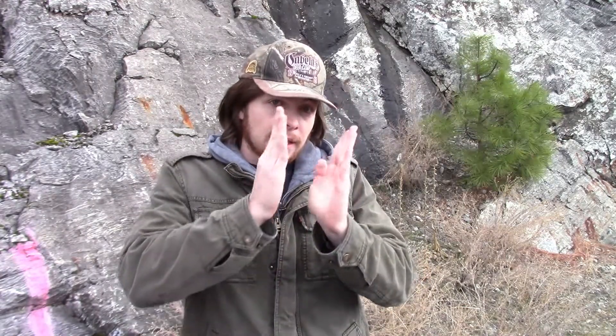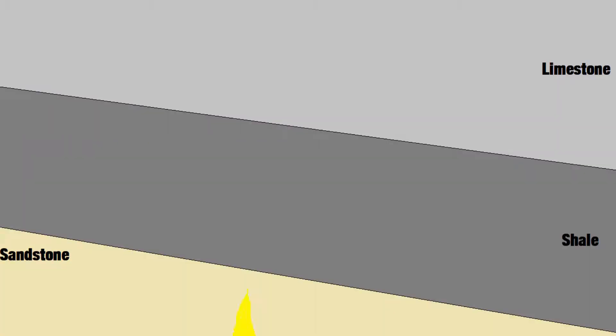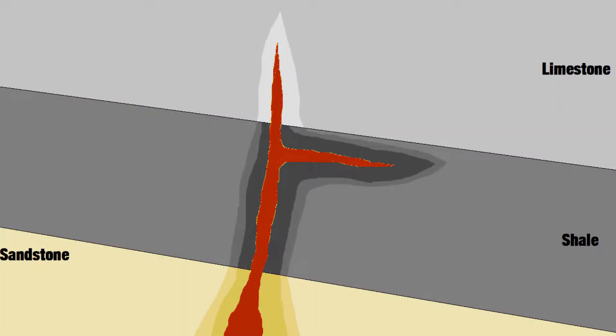Regional metamorphism sounds just like it is — metamorphism that takes place over a large area. Contact metamorphism is when you have an igneous rock come in contact with another rock and basically bake it, causing it to metamorph around the edges. So if you have a sedimentary rock and hot magma is injected into it, it'll bake the outlines of that rock and cause it to metamorphose.